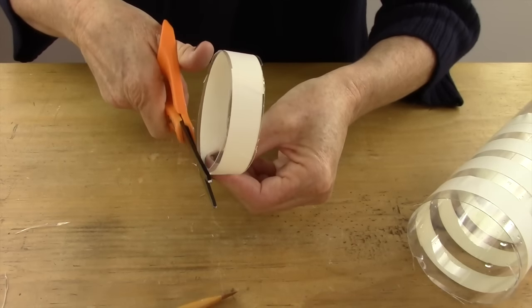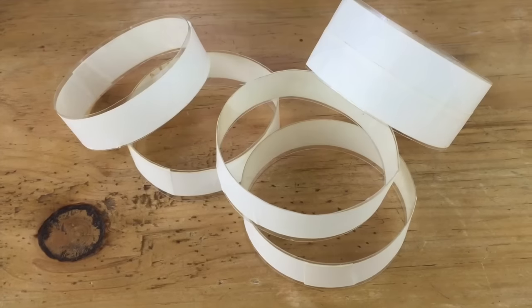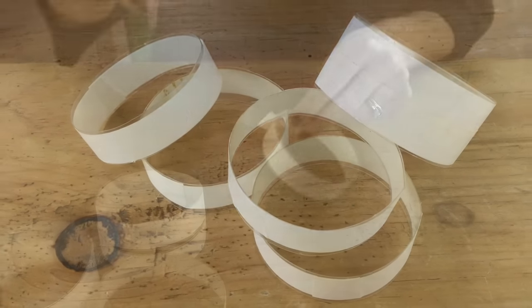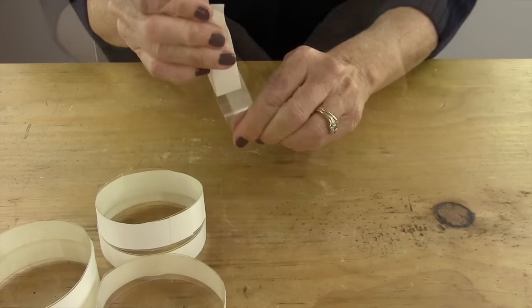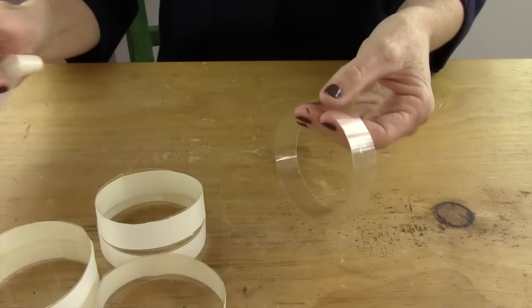After you've cut both sides, trim the edge to make sure there's no little strays of plastic. Then take the tape off of each plastic bracelet.